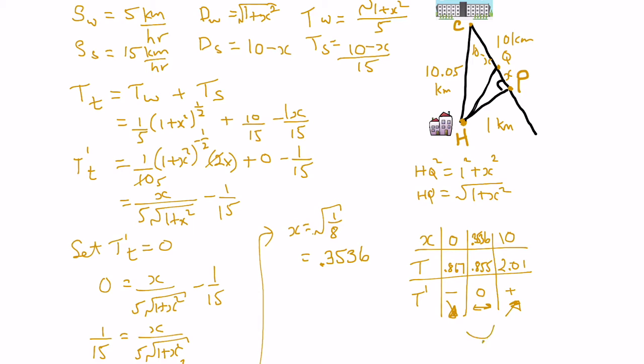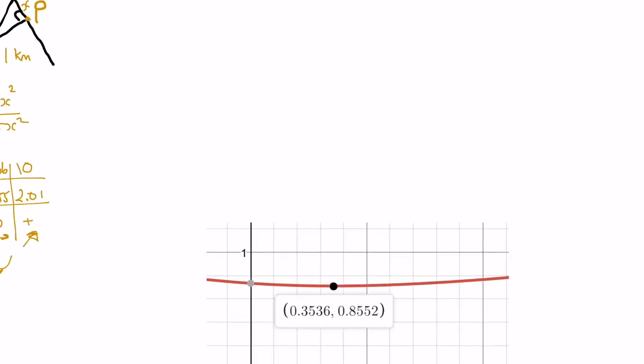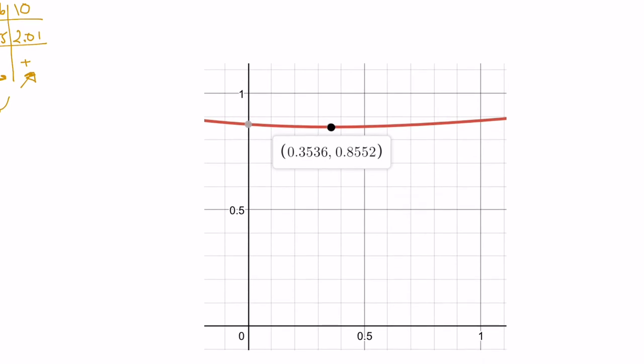The graph looks like this, and that point is a minimum. So, if we also wanted to confirm with a graph, we can look at the graph of this function. A little snapshot here, and the slope of the tangent line here gives us a minimum, where the value for the x value is 0.3536 as the distance, with the minimum time of 0.8552.